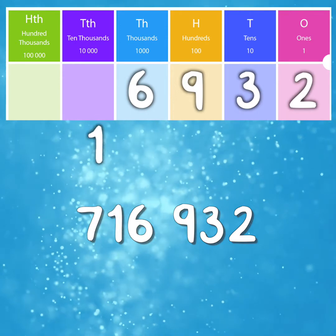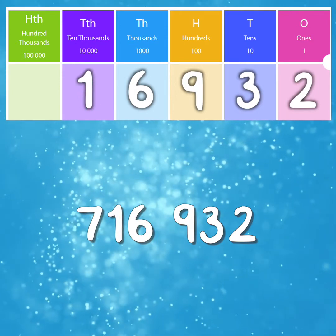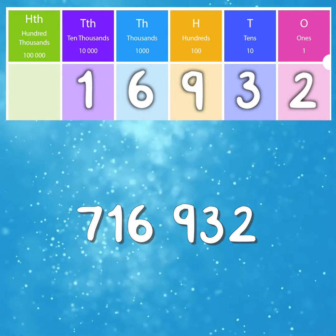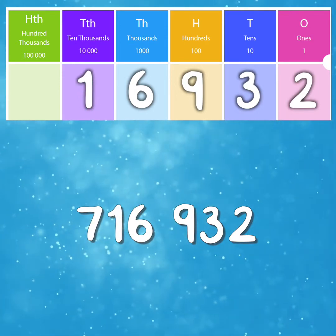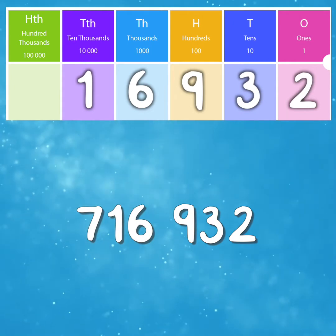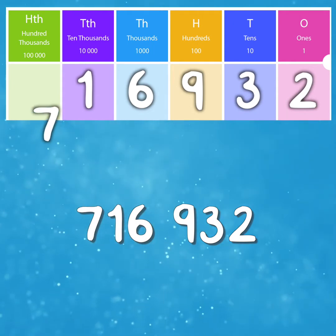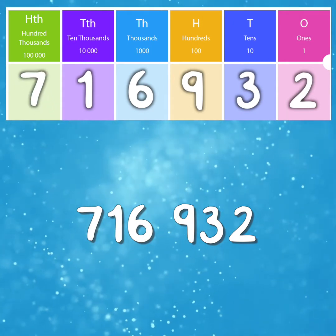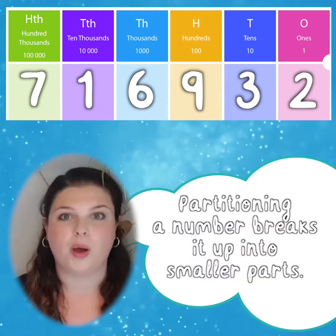A 1 in the 10 thousands column means the value of the digit 1 in our number is 10 thousands. Moving over again, we have a 7 in the 100 thousands column. Therefore, we have 700 thousands in our number.